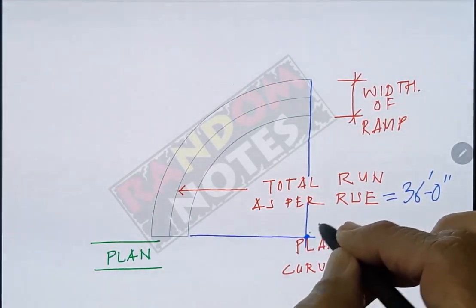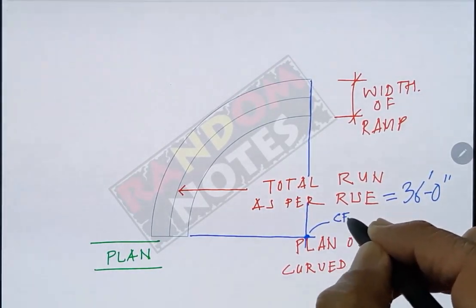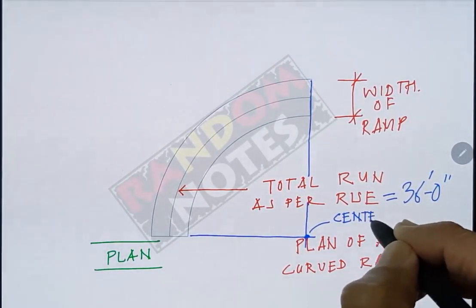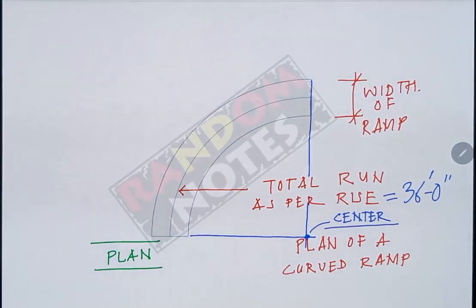Now this is the center of the arc and this will be used in the next step for achieving the ramp. We will now work in isometric view to understand the rising of the ramp.